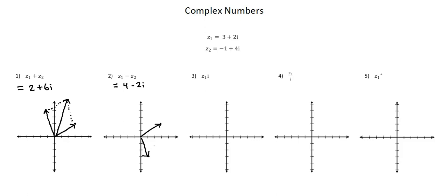Now, looking at the result of the subtraction, 4 minus 2i — plotting the point and creating the position vector. What we see is that the geometrical representation of this subtraction is the subtraction of two vectors. Subtracting vectors means we take our first vector and add the opposite of the second vector, which we have represented as the opposite of Z2. Using the parallelogram rule, we confirm that the resultant vector is Z1 minus Z2, the same as Z1 plus the opposite of Z2. Thus, the subtraction of two complex numbers is represented geometrically as the subtraction of two vectors.